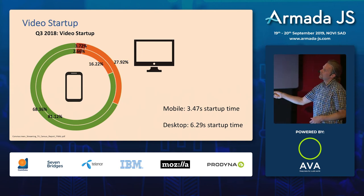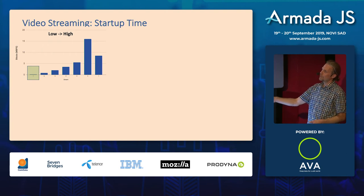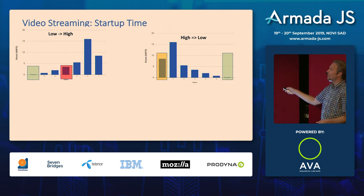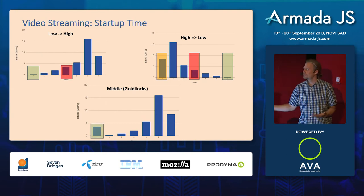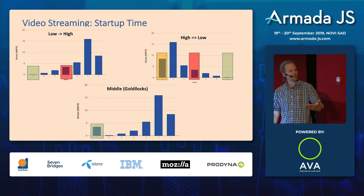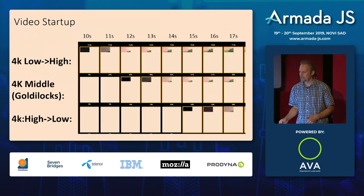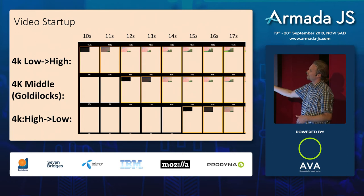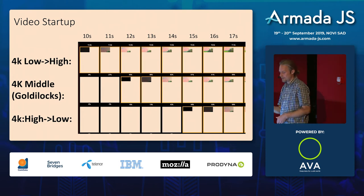A lot of videos don't start because players begin with a super-high-quality stream, drop to low quality, then climb back up — that's a long startup time. Amazon takes a Goldilocks approach: they know users will wait a couple extra seconds for long-play content, so they start with higher quality. Starting with the lowest quality makes the video start faster, but one video at the same final quality took six seconds longer when started at high quality first. Avoid that pattern.